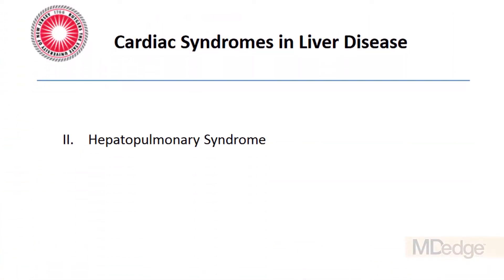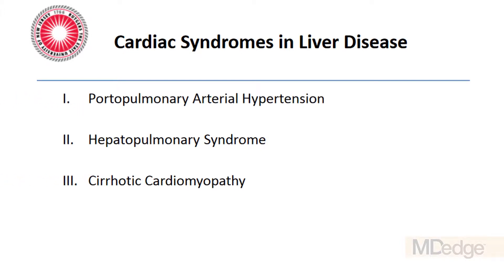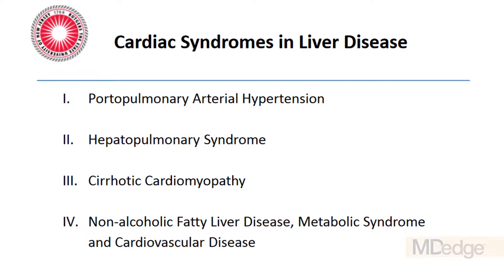I spoke today about the interface between advanced liver disease and cardiovascular disease and focused on four key syndromes that sometimes occur in association with advanced liver disease. Those included the development of hepatopulmonary syndrome, portopulmonary hypertension, cirrhotic cardiomyopathy, and finally the emerging association between non-alcoholic fatty liver disease and cardiovascular disease.